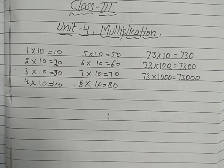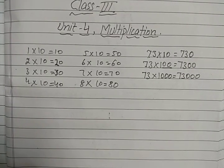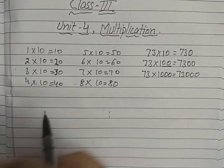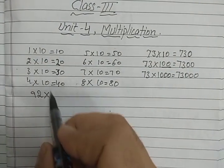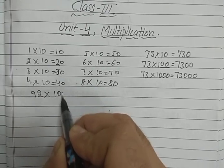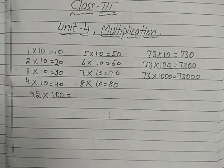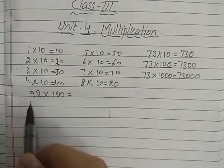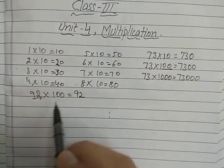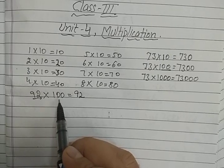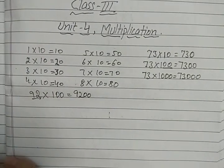Let us take some more examples. Suppose we want to multiply 92 by 100. We will write 92 and count the number of zeros — how many zeros are in 100? Two — so we write two zeros on the right side.